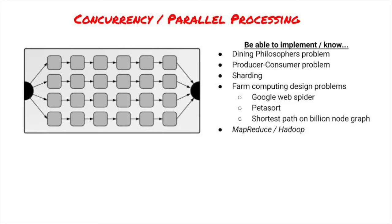For parallel processing, look into sharding and what makes for good sharding. Also, think about design problems that can use a farm of computers. Examples include designing Google's web spider, trying to spider the entire internet, implementing petasort, sorting a petabyte of string data, or finding the shortest path between two nodes in a graph so large that it's split among multiple computers. Optionally, depending on what kind of job you're going for, you might want to experiment with MapReduce or Hadoop.